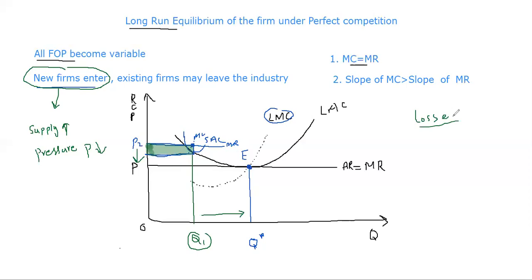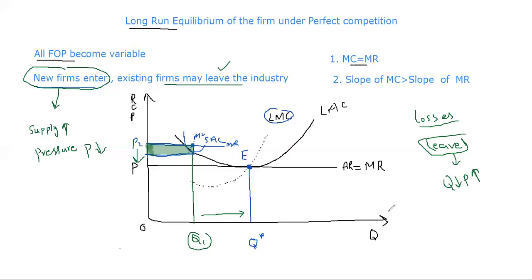In the case of losses, existing firms have the choice to leave the industry. When firms leave, supply decreases and price rises. In the long-run period of time, firms cannot earn super-normal profit or bear losses. The only option for firms is to continue production while earning normal profits.